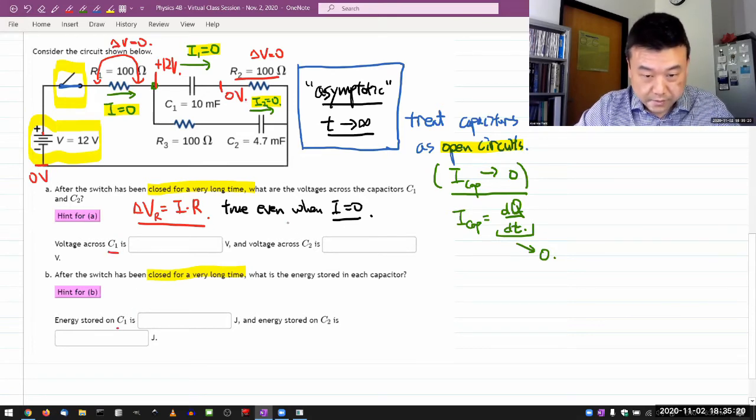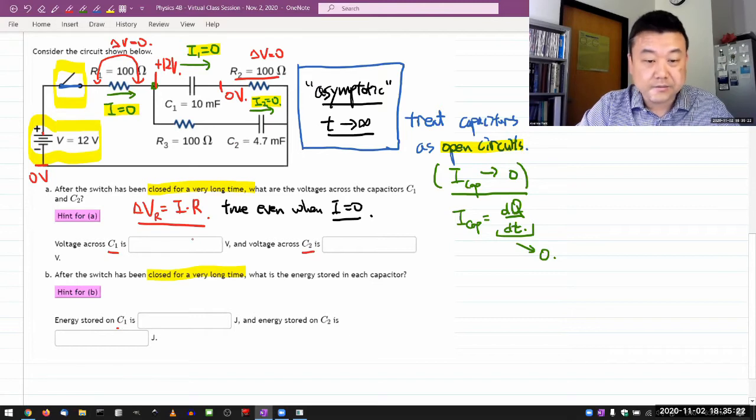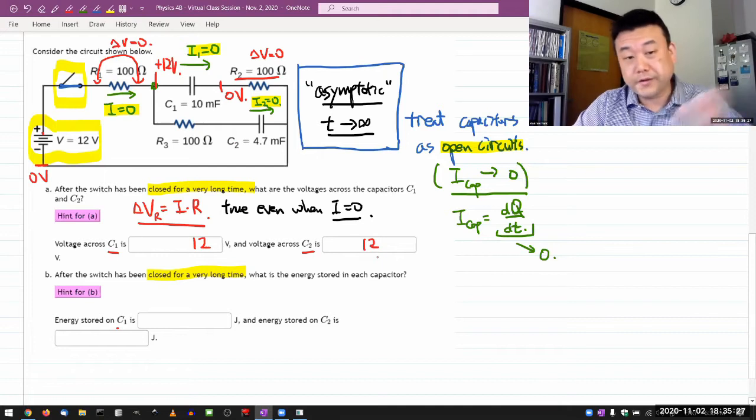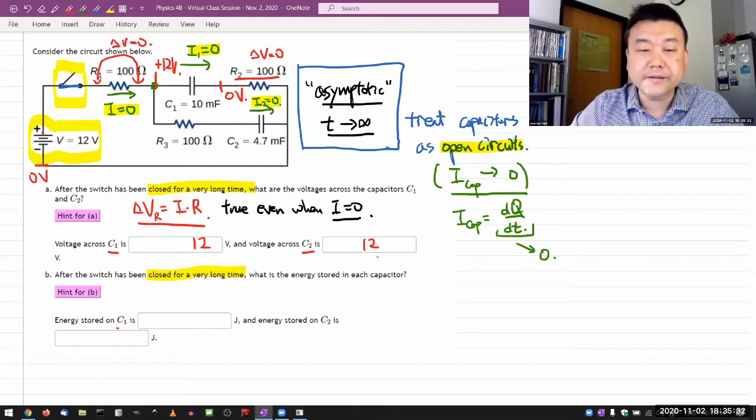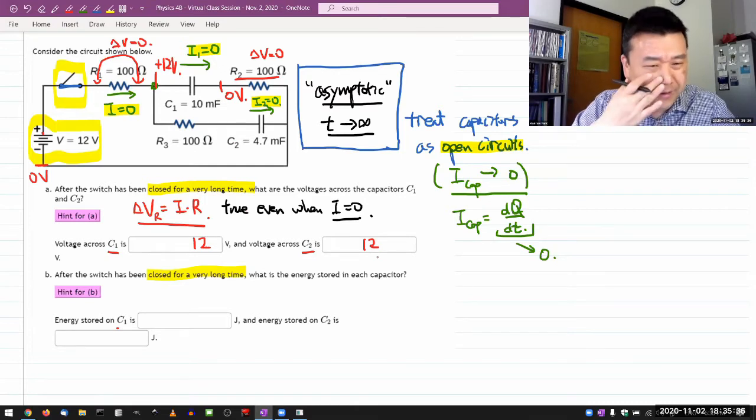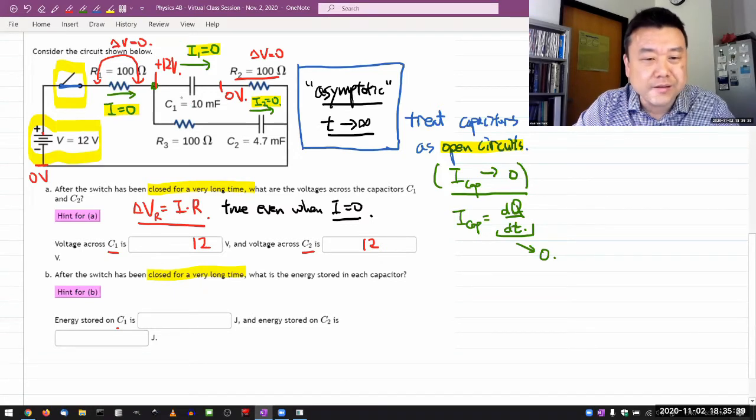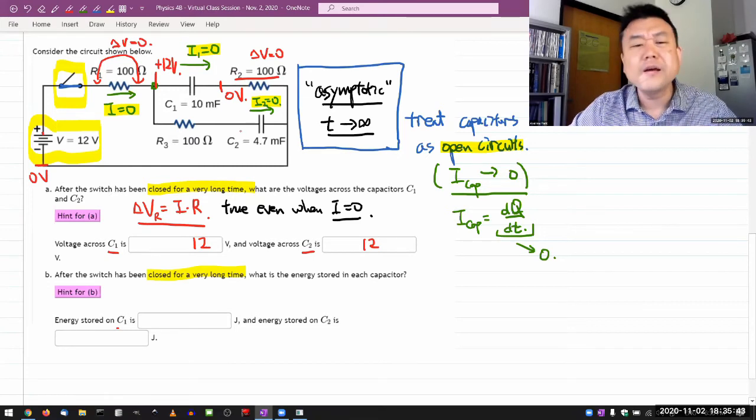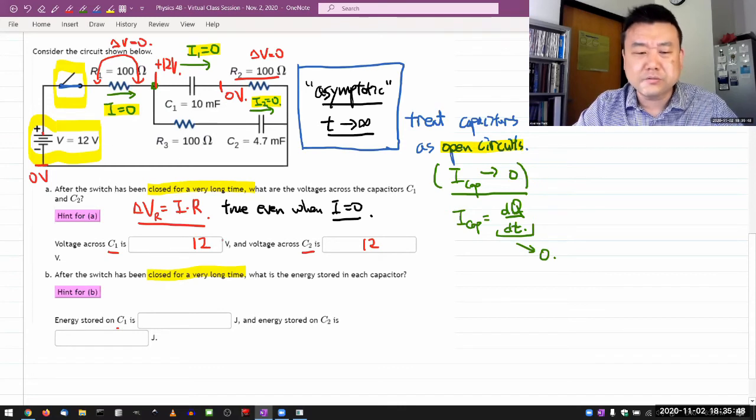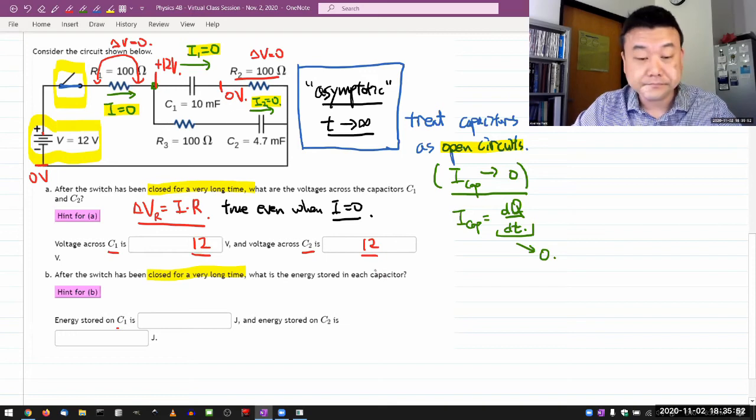Both capacitors is 12 volts, the entire voltage of the battery. That's for this circuit, even though it looks kind of complicated. I guess it doesn't always have to be that - if these two capacitors were in series, there would be more work. But in this particular arrangement, they are kind of in parallel, which is why they both have the full voltage of the battery.